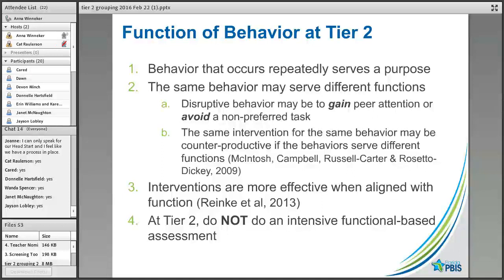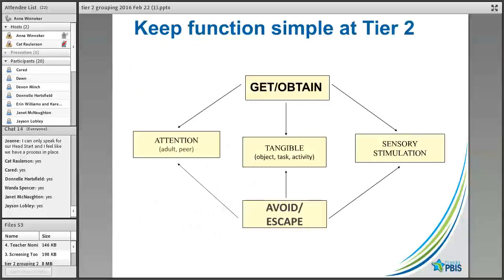Research shows that the same intervention for the same behavior can be counterproductive if that behavior serves different functions. Our interventions are much more effective when aligned to function — but again, at Tier 2 we're not doing an intensive functional assessment. We're keeping it simple: is the student trying to obtain attention from adults or peers, get something tangible or access a preferred activity, get sensory stimulation — or are they trying to avoid something? That avoid piece is where the academic component becomes crucial: it's very different to avoid a task you know how to do versus one you have a deficit in.